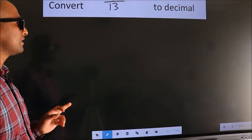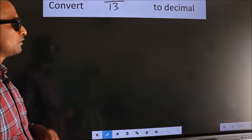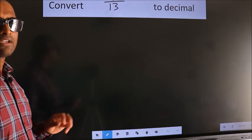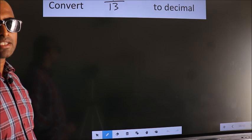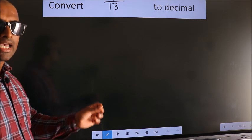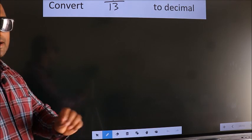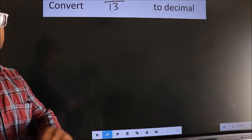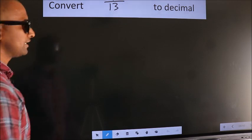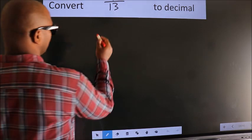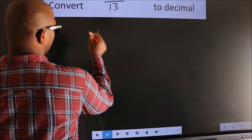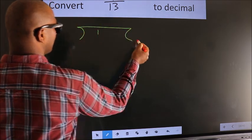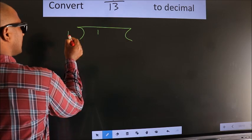Convert 1/13 to decimal. To convert this to decimal we have to divide, and to divide we should frame it in this way: 1 here, 13 here.